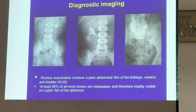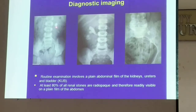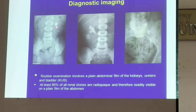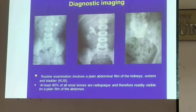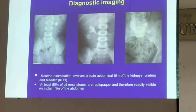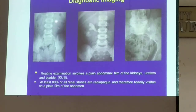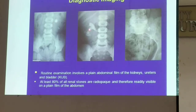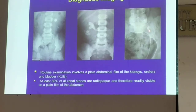There is a radiopaque density here on the right — actually on the left — and then this one. This is more of your IVP, actually a KUB examination. 80% of renal stones are radiopaque. This is a renal stone. This is a staghorn calculus. This is a ureteral stone.